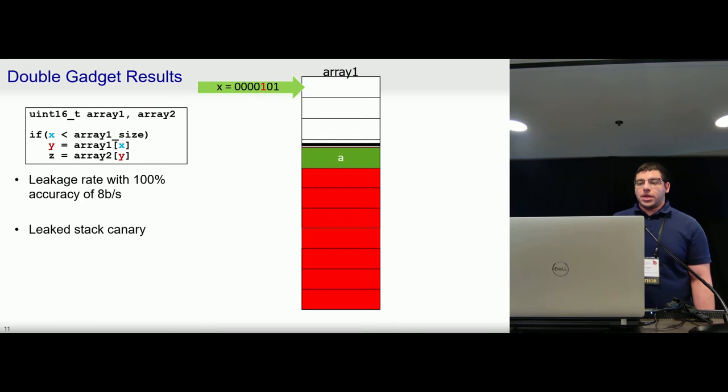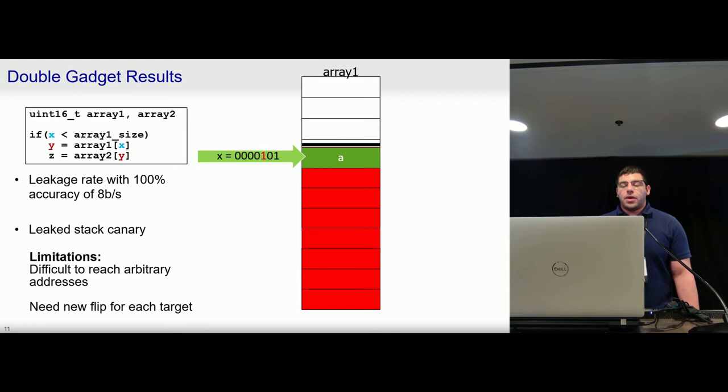Now you might have noticed a key limitation with this, which is that while we can point past the bounds of these arrays and target things like stack canaries, we can only flip one bit at a time. And so it becomes difficult to arbitrarily target data in victim memory. In particular, suppose that we flip this bit to point to this value A, and now we want to leak a new value in memory. So the first thing we have to do is find a new bit flip, which will take time.